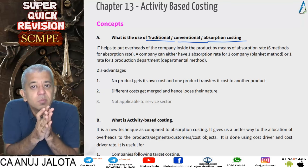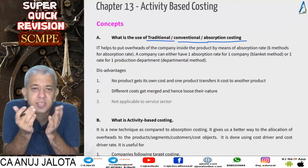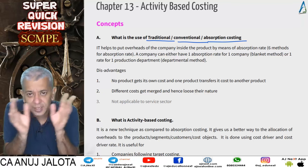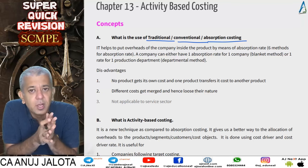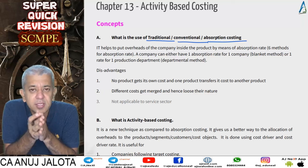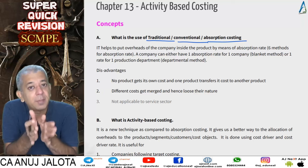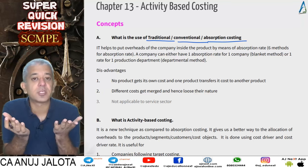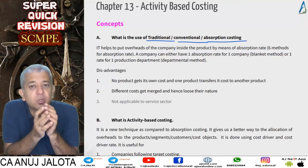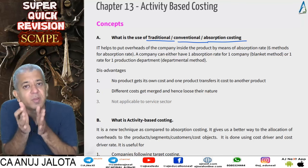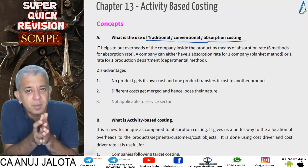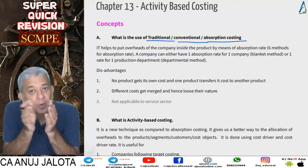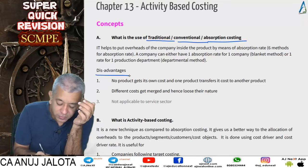A company has the option to have one rate for the entire company, called the blanket rate, or one rate for each department — process one, process two, process three — which is called the departmental method. Whatever suits the company can be used.